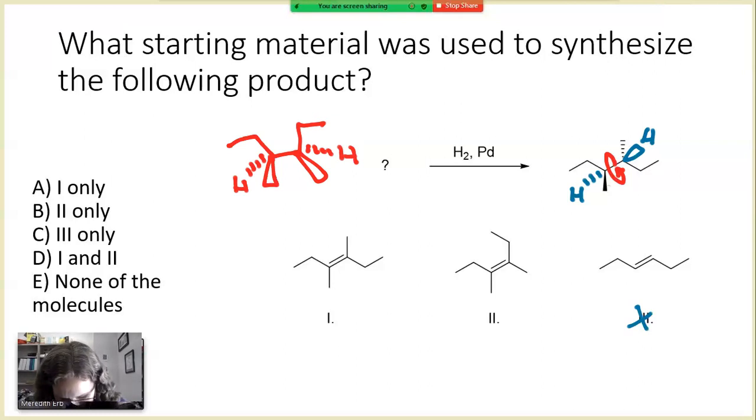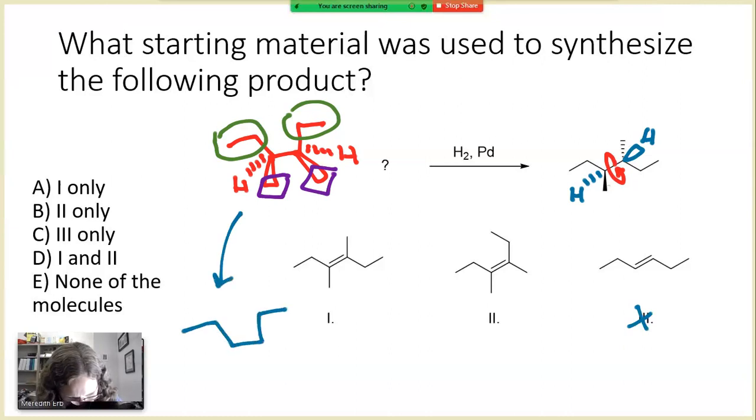In addition reactions, the stereochemistry of the starting material is also maintained in the reaction. That tells me that in the starting alkene, the two ethyl groups are on the same face of the alkene and the two methyl groups are also on the same face of the alkene. If we work our way backwards and think about what our starting alkene should be, we're going to have a tetrasubstituted alkene in which two ethyls are on the same face and two methyls are on the same face. This corresponds to molecule number two.